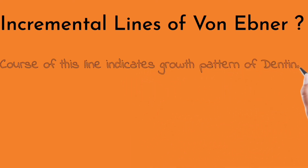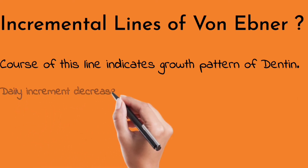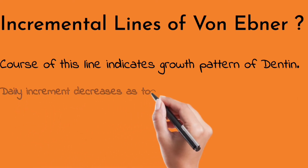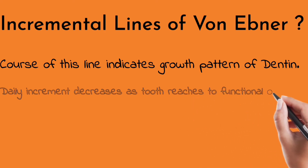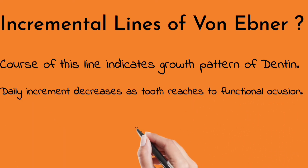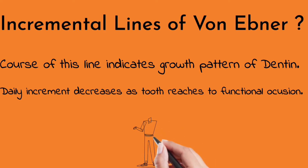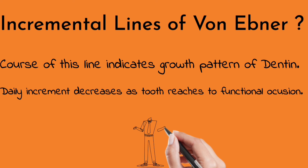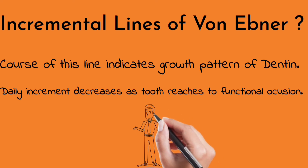The incremental lines of von Ebner indicate the growth pattern of dentine. The daily increment decreases as the tooth reaches functional occlusion. The distance between these lines varies between 4 to 8 micrometers in the crown and is less in the root portion.